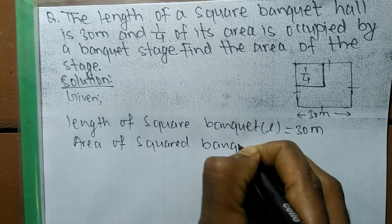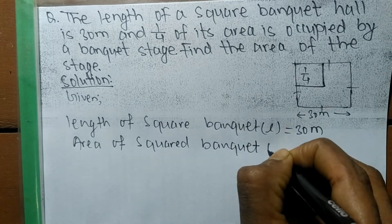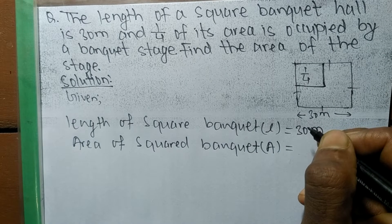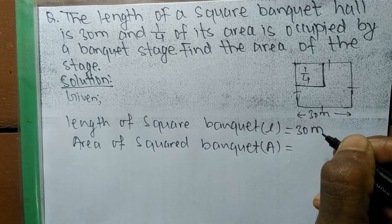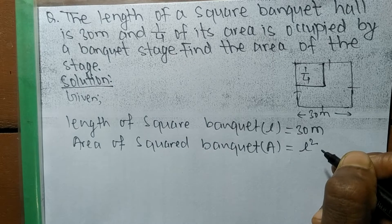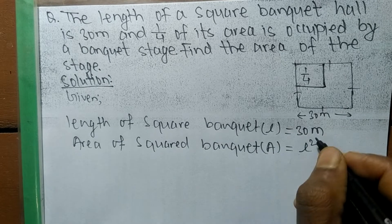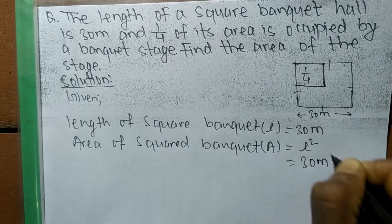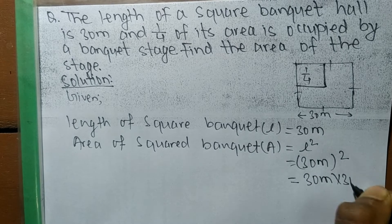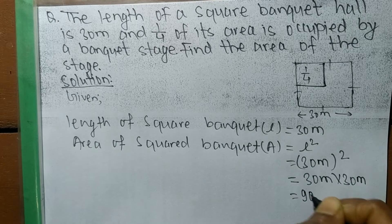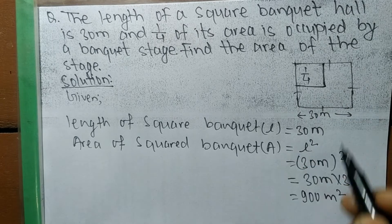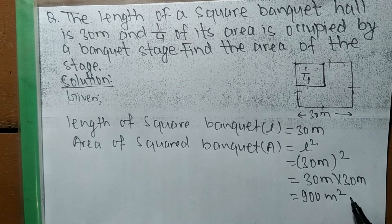Area of the square banquet, we denote it by A. For a square-shaped structure, the area equals the square of each side, so A = L² = 30 meters × 30 meters = 900 meter square. So the area of this banquet hall is 900 meter square.